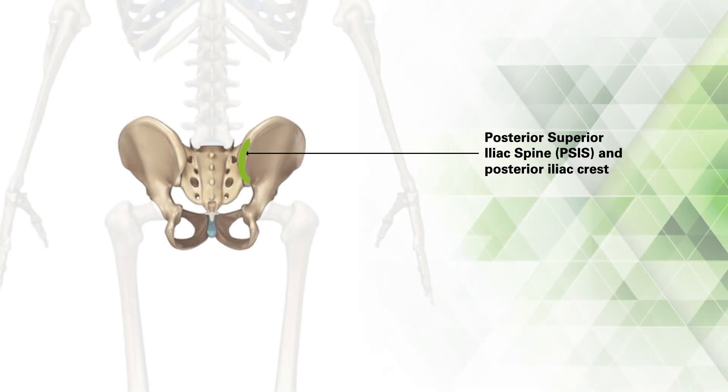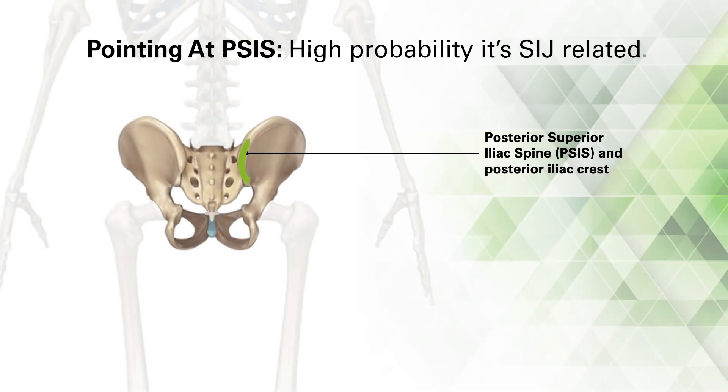At a basic level we're going to be talking about applied anatomy. If you have an anatomic structure that's innervated, it can hurt. My military background says we want to shoot at the right target — you're not going to offer the right treatment if you don't have the right diagnosis. The most important lesson is that if they point directly at their PSIS, there's a high probability that it's the SI joint. That's rule number one.